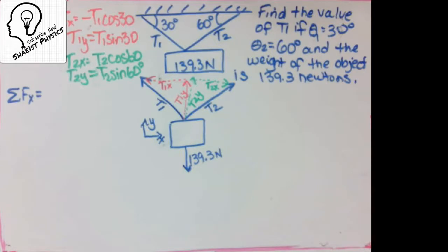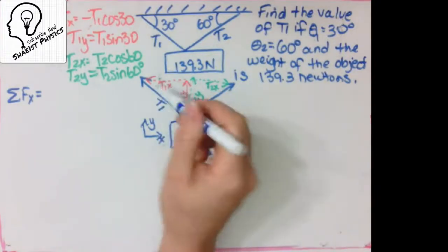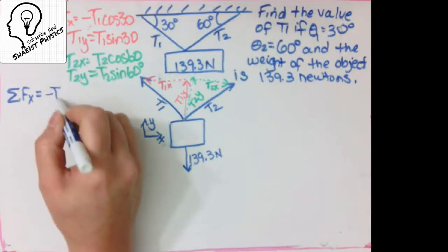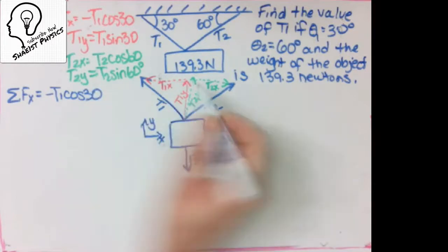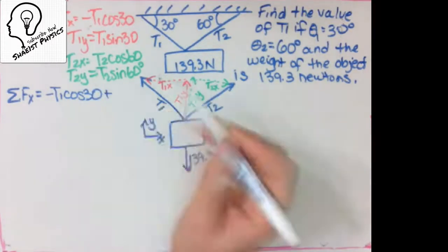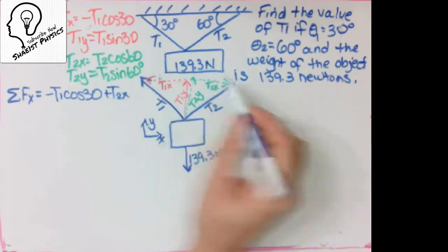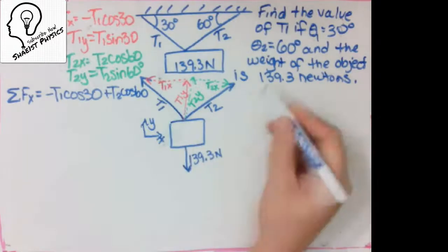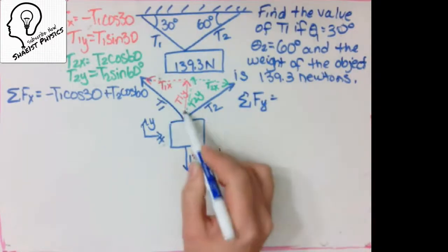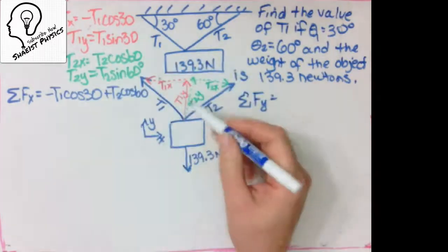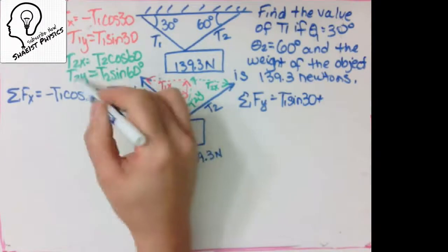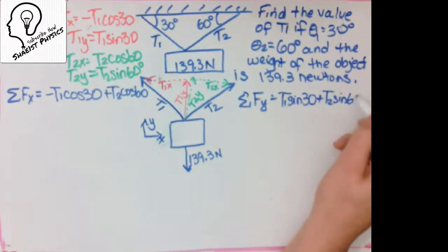Now we're going to add up these components. Let's take a look and add all of our X components. The only X components we have are T1X — that's a negative T1 cosine 30 — and the other X value is positive T2X, which is equivalent to T2 cosine 60. On the other side, I'm going to add up my Y forces. I have T1Y, which is T1 sine 30, and I have T2Y, which is equal to T2 sine 60.